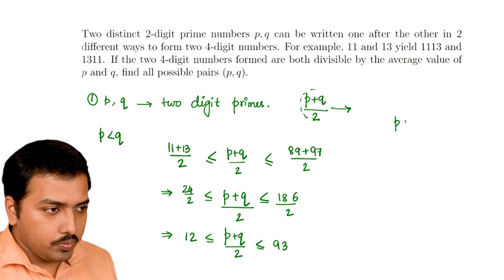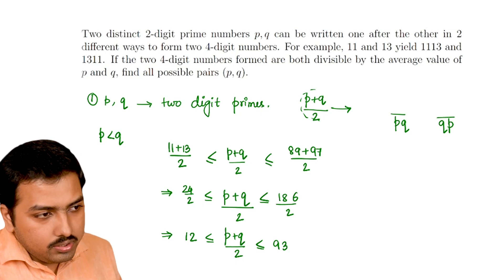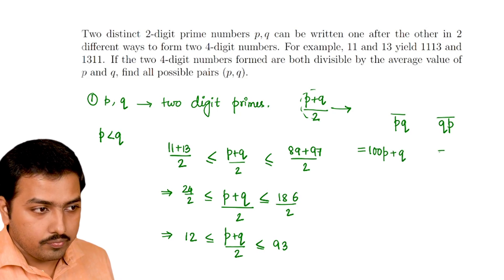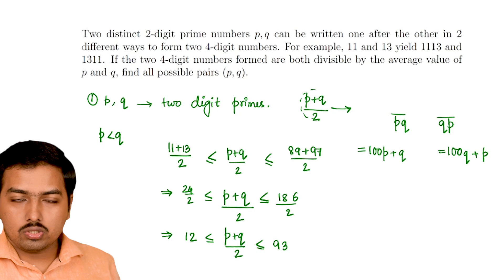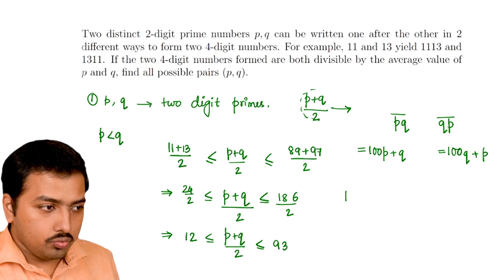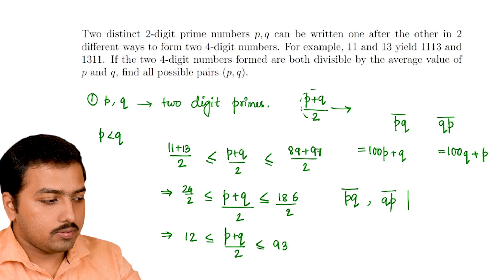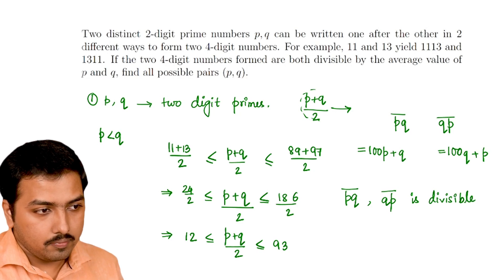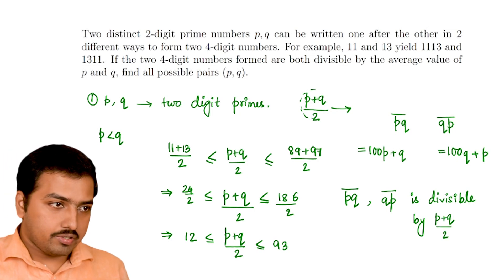So let's see what we can do now. The numbers are pq or qp. We have to write one after the other, so in other words, the numbers we will obtain would be 100p + q and this is going to be 100q + p, because p is a two-digit number and so is q. What we can do right now: it is given that both of them, pq and qp, both of them are divisible by this.